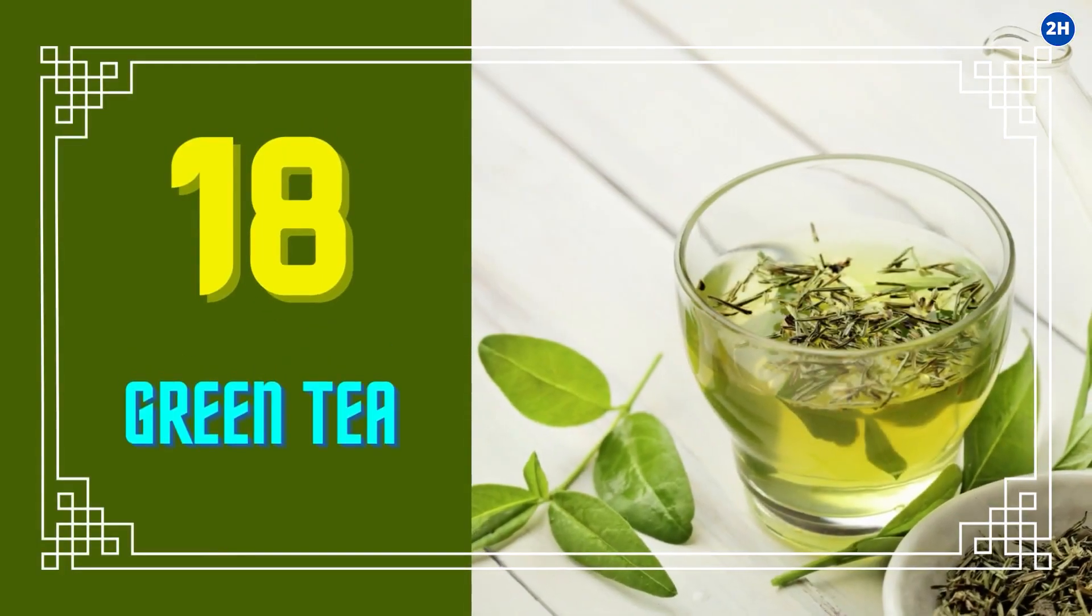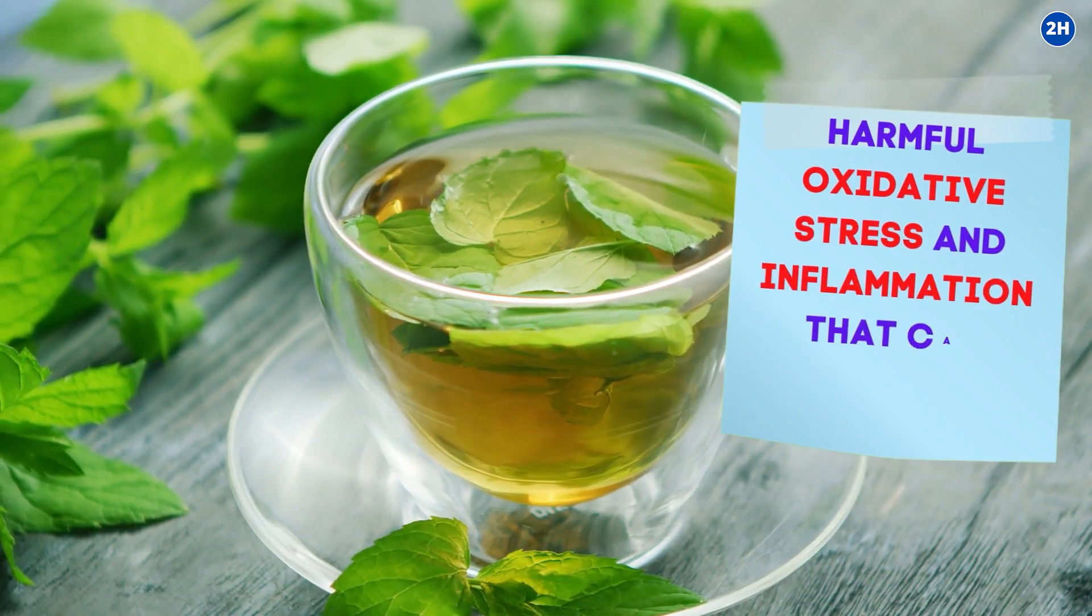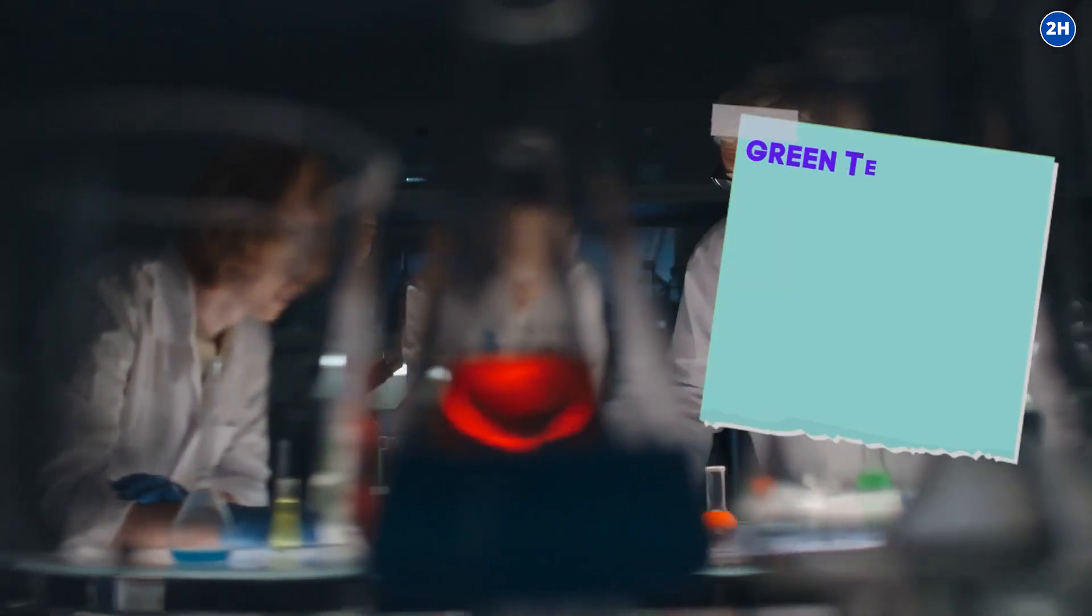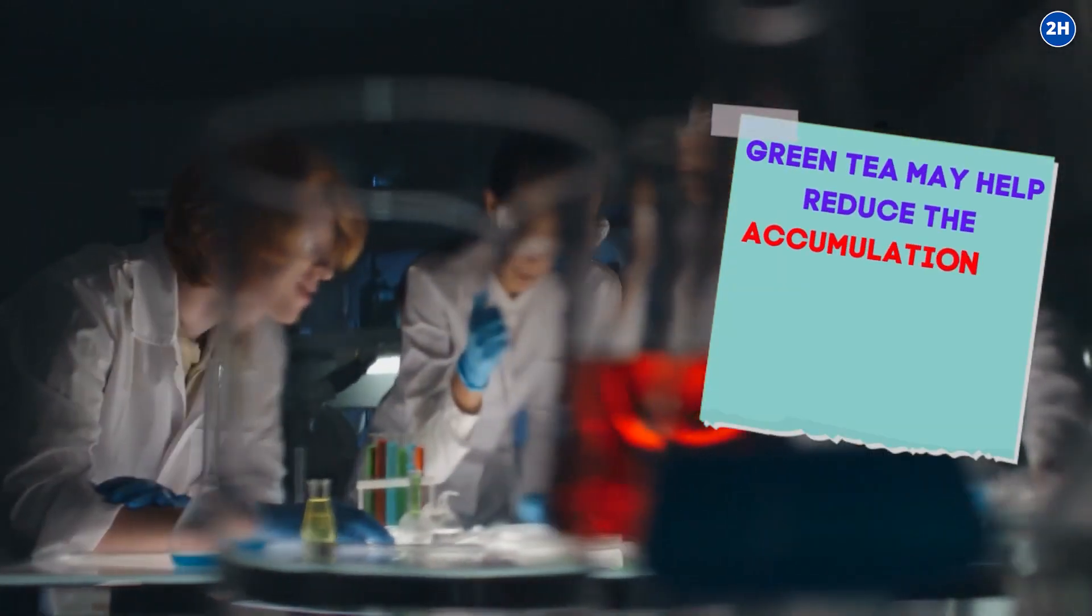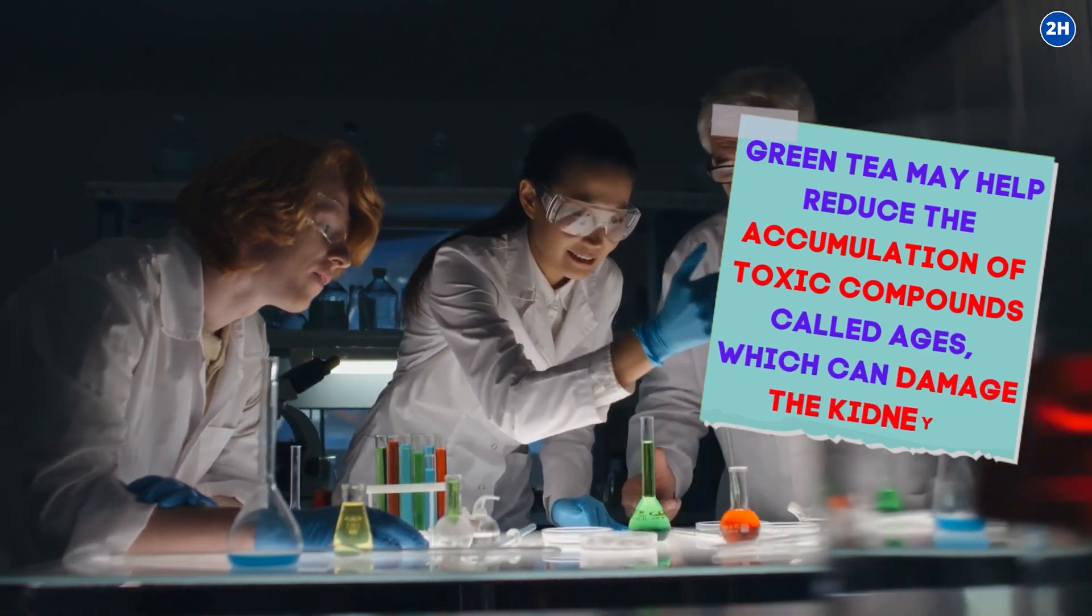18. Green tea. Green tea fights harmful oxidative stress and inflammation that can damage the kidneys. Researchers also believe that green tea may help reduce the accumulation of toxic compounds, called AGEs, which can damage the kidneys.